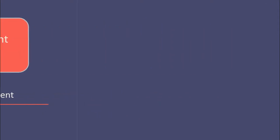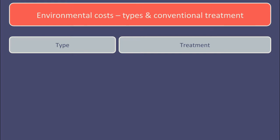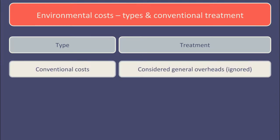There are various different types of environmental costs. Let's consider how the conventional treatment leads to them being ignored or otherwise mismanaged. Firstly, conventional costs — for example heating and other energy costs and water consumption. Often these costs aren't highlighted in the traditional accounting system. They're considered to be part of general overheads, and because of this they're not highlighted in management reporting, so management get no visibility of the size of these costs or any incentive to manage them specifically.